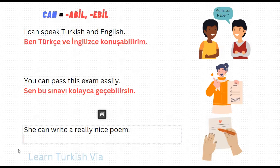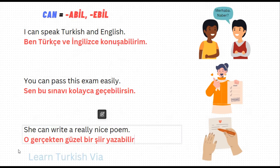In the following sentence, it says 'she can write a really nice poem.' Let's translate. She – o, really – gerçekten, nice – güzel, a poem – bir şiir, write – yaz, can write – yazabil, simple present tense – yazabilir. And there is no personal pronoun suffix for she or he, so that's it. 'She can write a really nice poem' is 'O gerçekten güzel bir şiir yazabilir.'